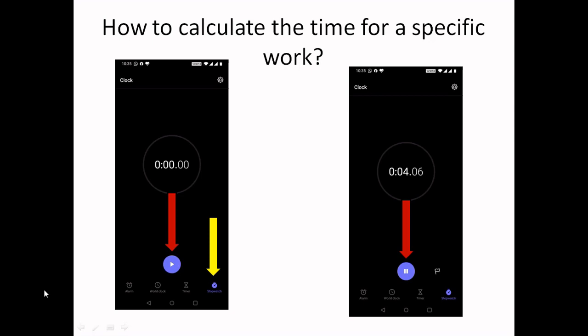Next thing is how to calculate the time for a specific work. Nowadays we are having stopwatch. Starting at 0:00, after the event has begun it has to be pressed here so it will be showing the time, how much time it has taken for doing that specific work, and it can also be reset by means of the same button. This is how we can calculate the time for a specific work.